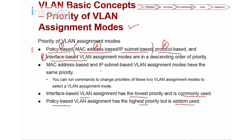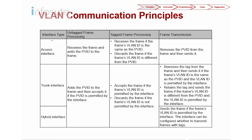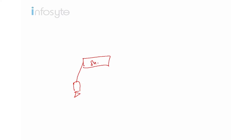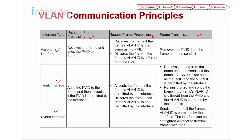Now let's examine VLAN communication across access, trunk, and hybrid interfaces. For an access interface, when an untagged frame is received — for example from a PC connected to port G0/1 with a PVID of VLAN 2 — the switch adds the PVID tag to the frame and accepts it. So an untagged frame receives the PVID tag upon ingress.